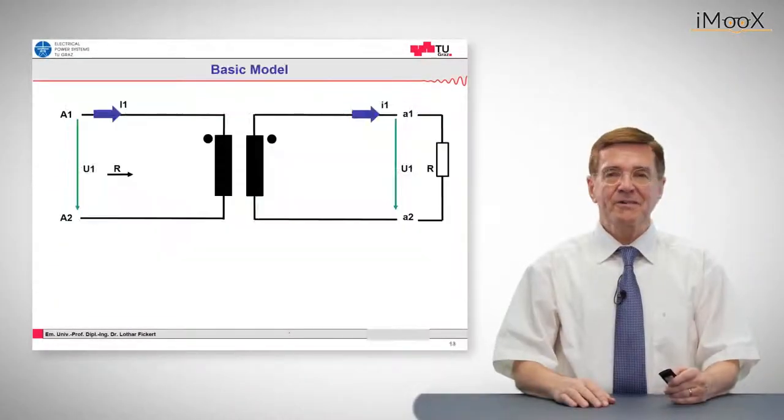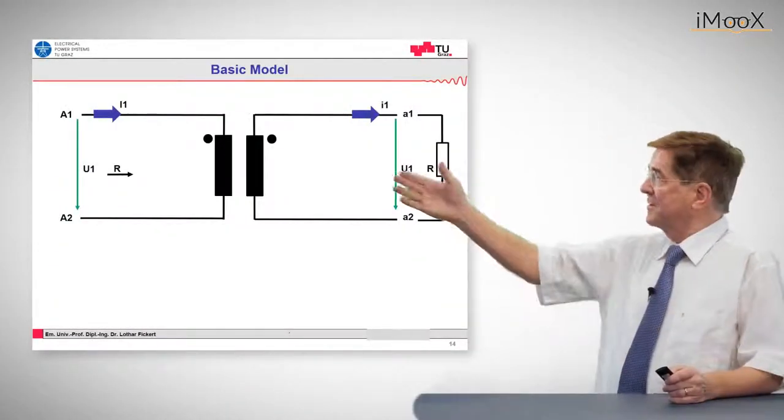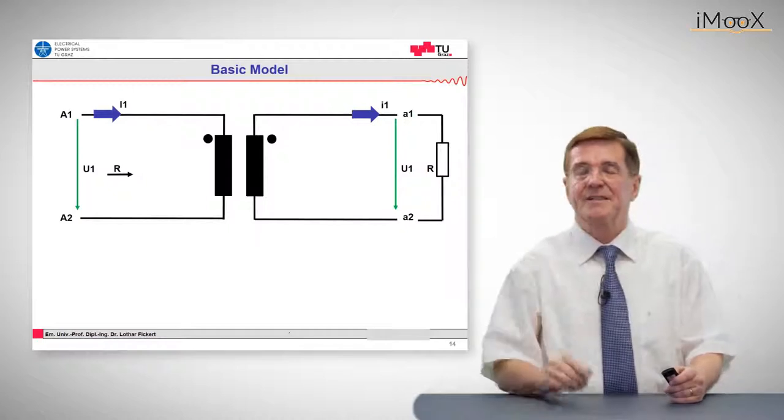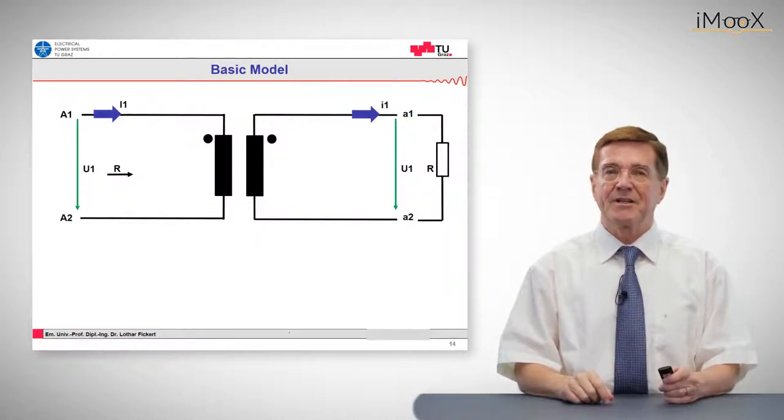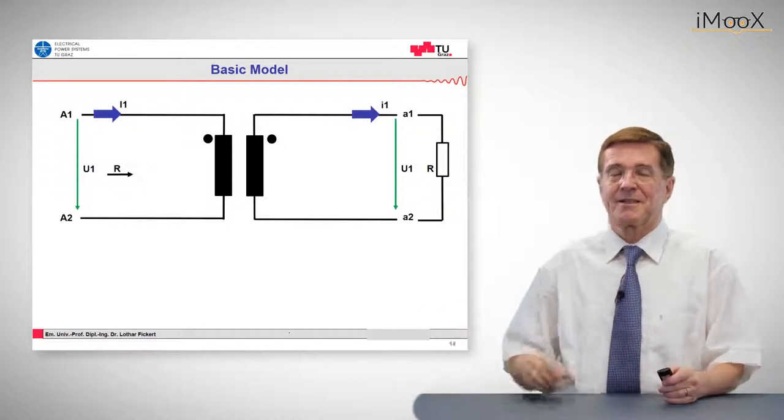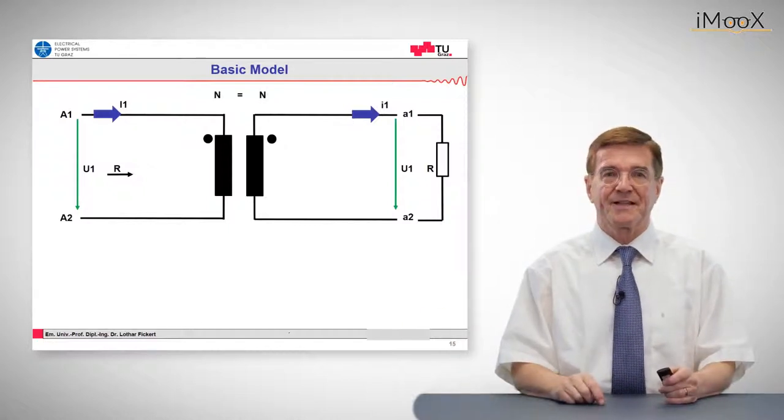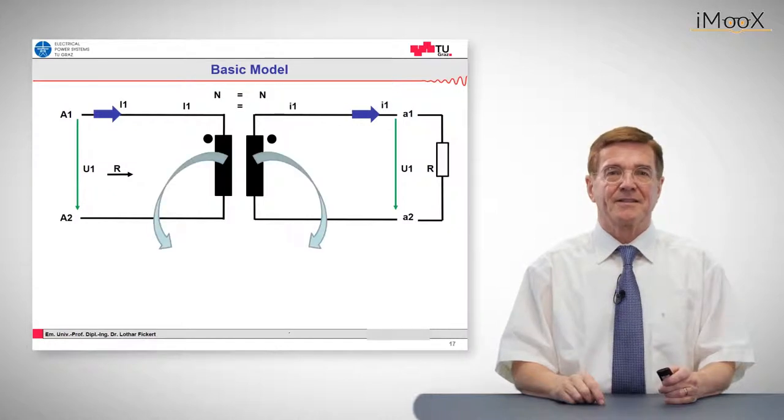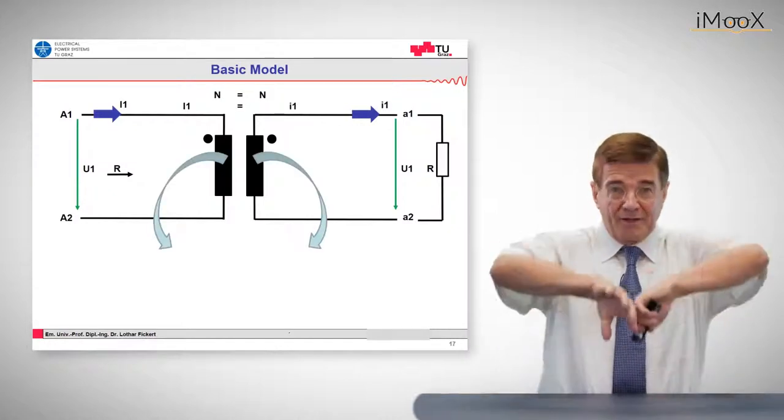Now we start with a very basic model, which is quite well known. This is the basic model of a single phase transformer, where the two windings have equal turns. So that means voltage U1 is applied, comes out as voltage U2 on the other side, and the currents are the same. And now I open this, I just redraw that,